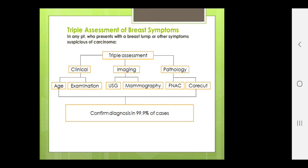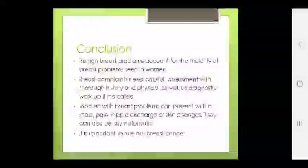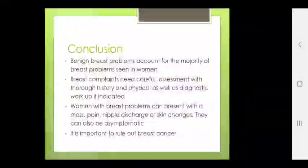Conclusion: benign breast problems account for the majority of breast problems seen in women. Breast complaints need careful assessment with thorough history and physical examination as well as diagnostic imaging. Women with breast problems can present with a mass, pain, nipple discharge or skin changes; they can also be asymptomatic. It is important to rule out breast cancer. Thank you.